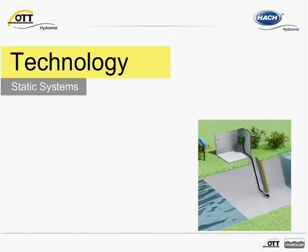Thanks, Nick. We will first look at the measuring principle of the OTT CBS. A piston pump inside the compact bubble sensor generates compressed air, which then flows through a dedicated line into a bubble chamber at programmable intervals, where it bubbles uniformly into the water. Depending on the water level above the bubble chamber, an air pressure equal to the hydrostatic pressure is established in the measuring tube. There is a linear relationship between the measured water level and the air pressure inside the measuring tube.